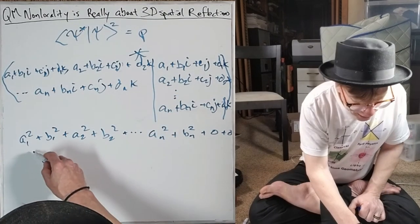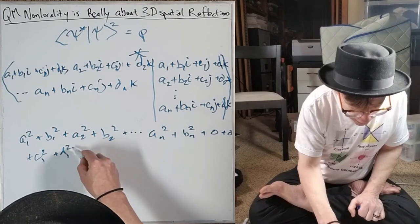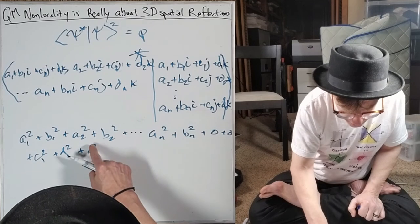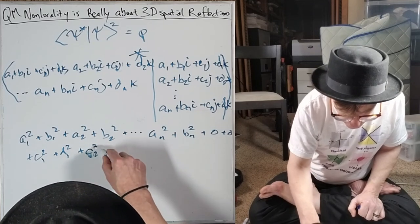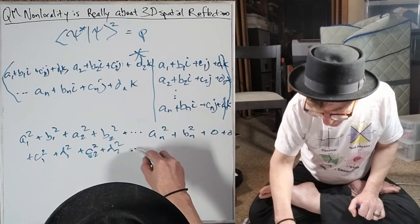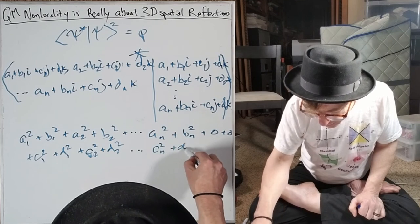And so now we get plus C1 squared plus D1 squared plus C2 squared and D2 squared dot dot dot to Cn squared and Dn squared.